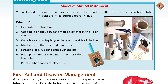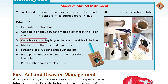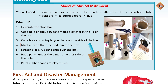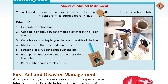Sabse pehle aap apni shoe box ko ache tarike se decorate kar lein. Uske baad cut a hole of about 10 cm diameter in the lid of the box. Phir us hole ko apni tube ke according on the side of the box rakh lein, mark kar lein, cuts on the tube and join the box. Aapne tube banayi hai aur shoe box ko decorate kiya hai.